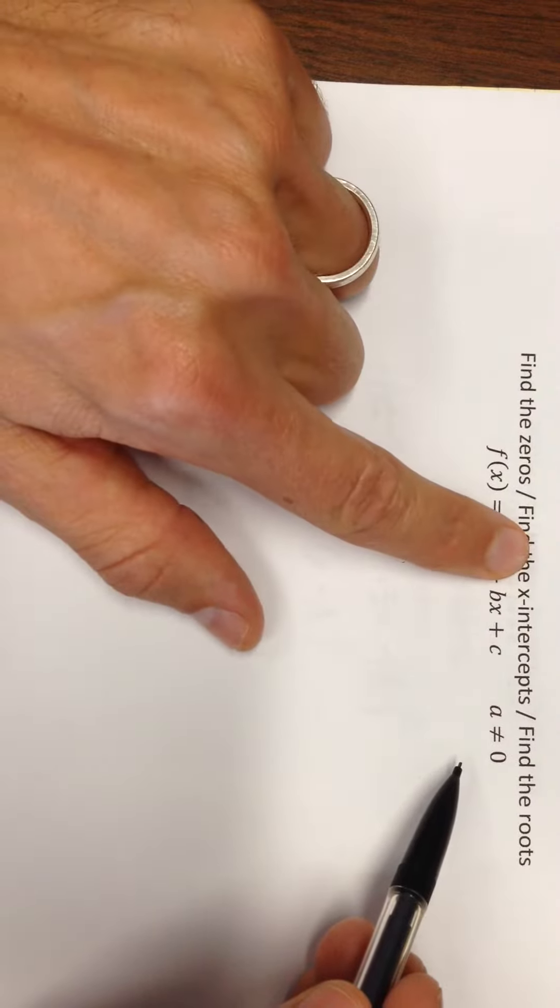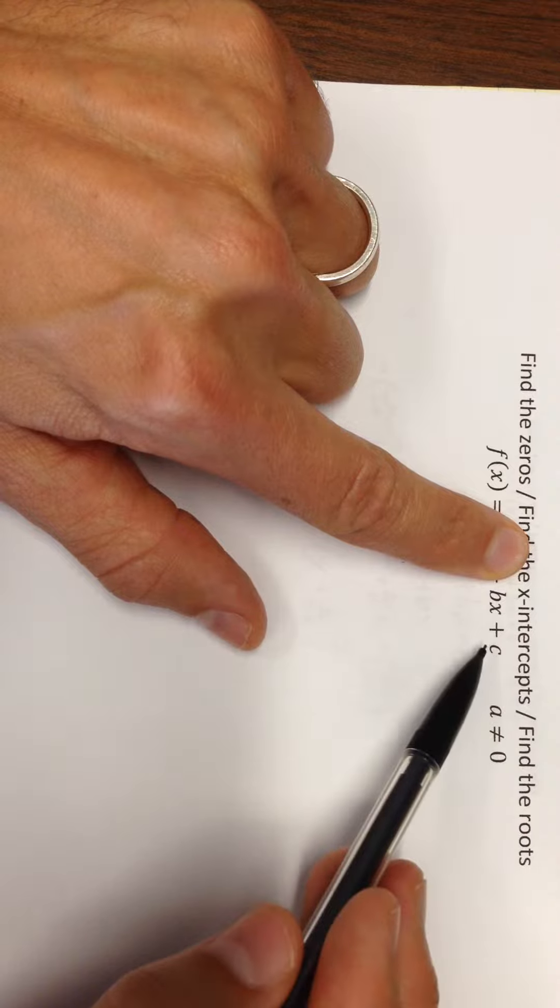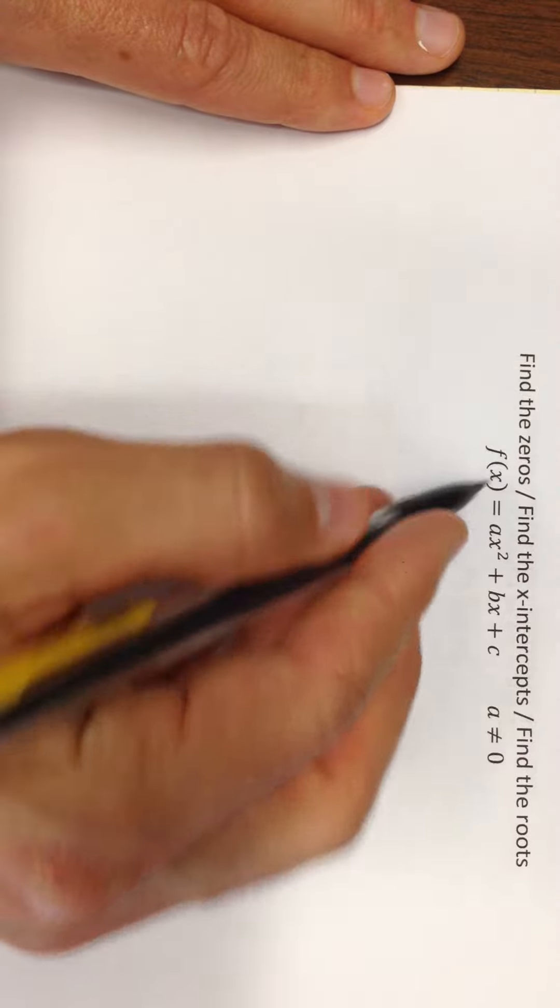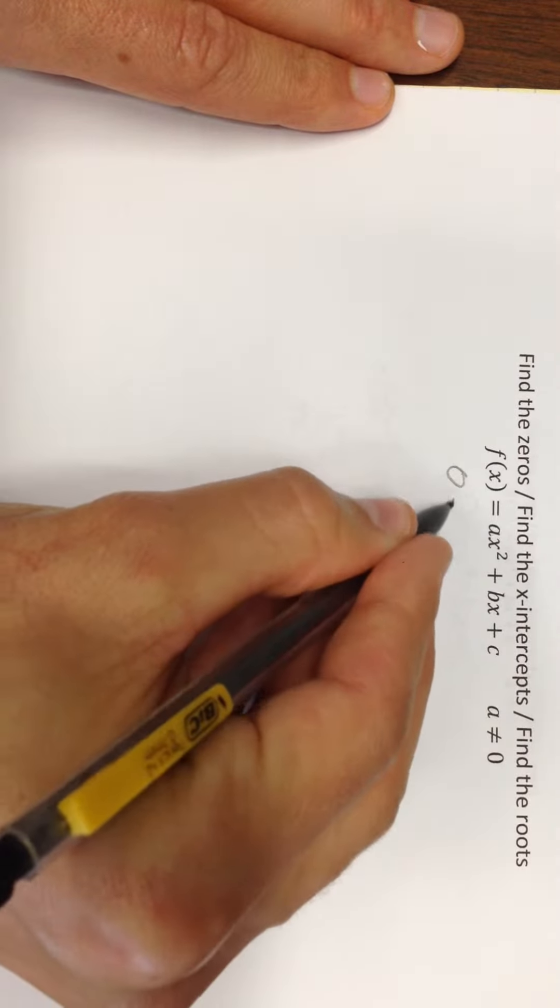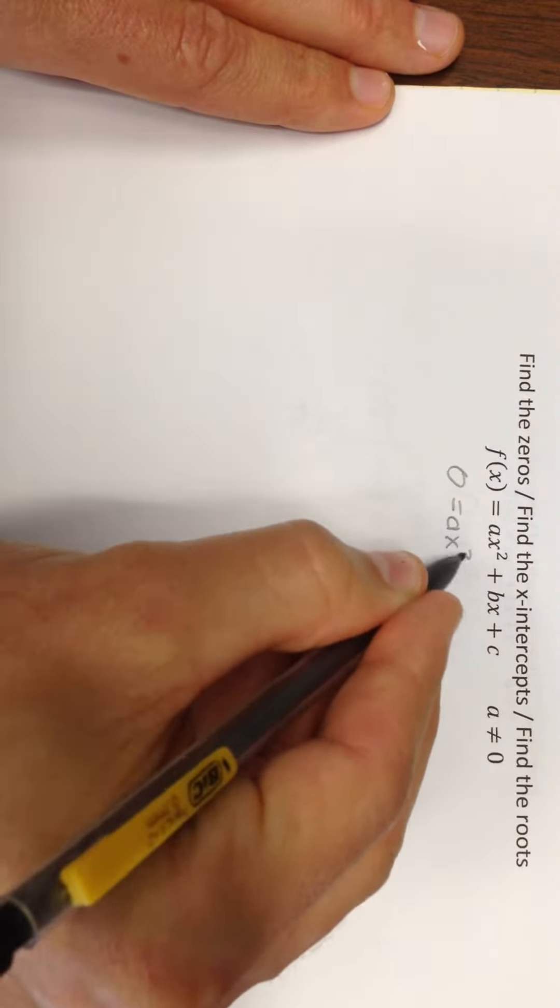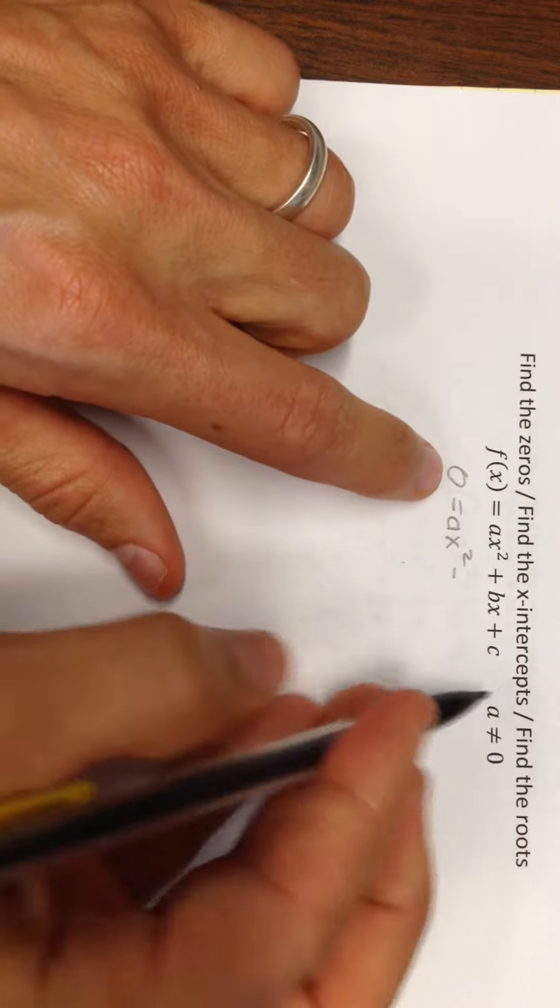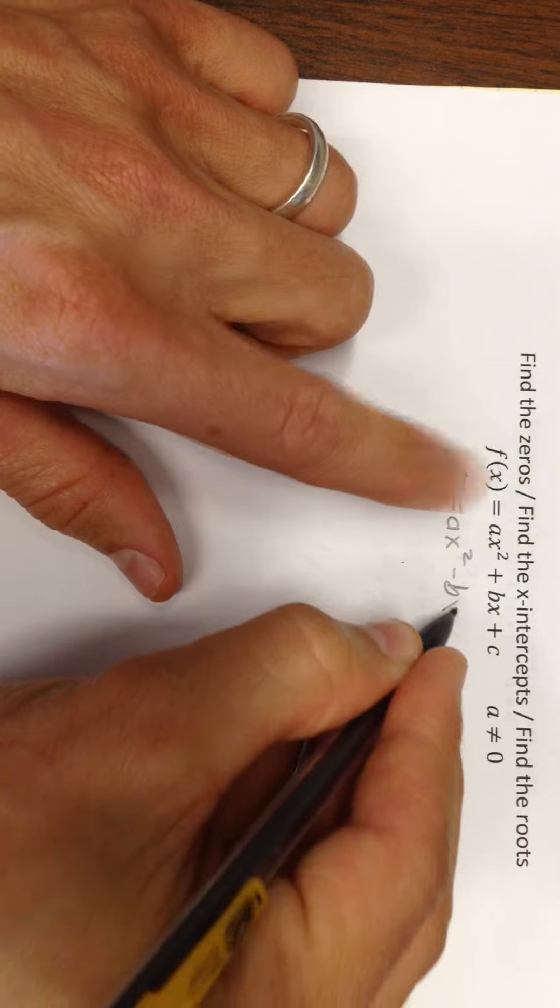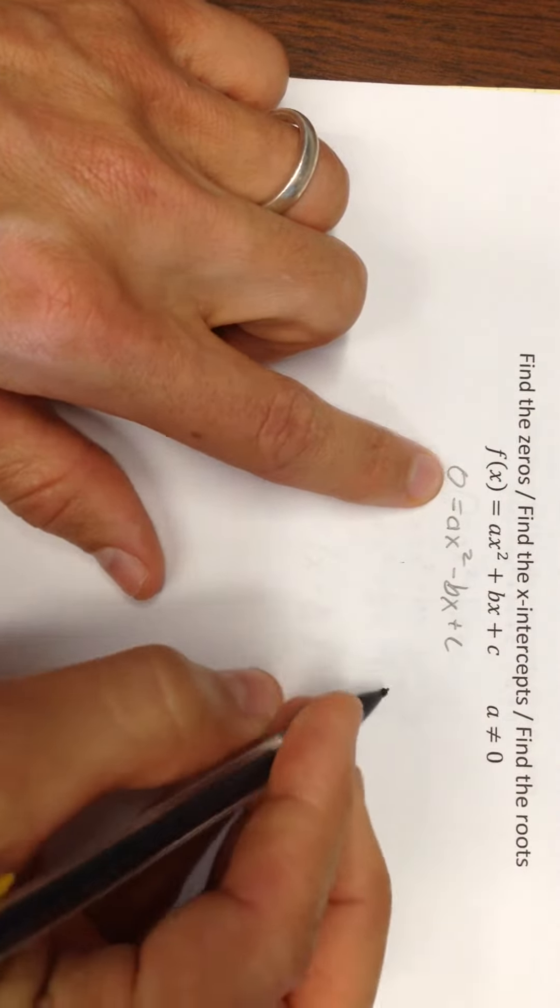Notice if a was equal to zero, that term would disappear and we just have a linear function. So we'd be dealing with that differently. Finding the zeros is when the output is zero. Another way to say that is find the x-intercepts, that's where y equals zero. Those are also called the roots. So these are all essentially setting this thing equal to zero.